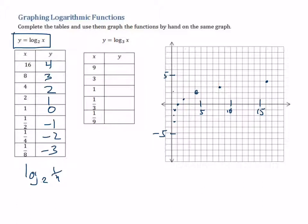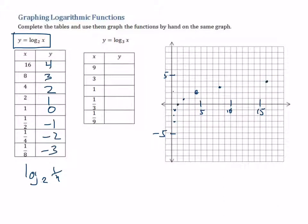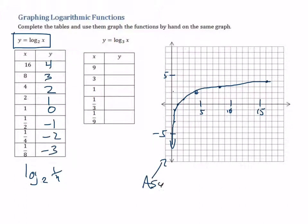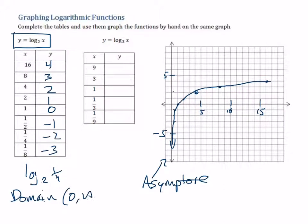If we graph these points — (16,4), (8,3), (4,2), (2,1), (1,0), (1/2,−1), (1/4,−2) — the curve gets closer and closer to zero but we cannot take the logarithm of zero or a negative number, so there's an asymptote. The domain for this function is from zero, not including zero, to infinity.